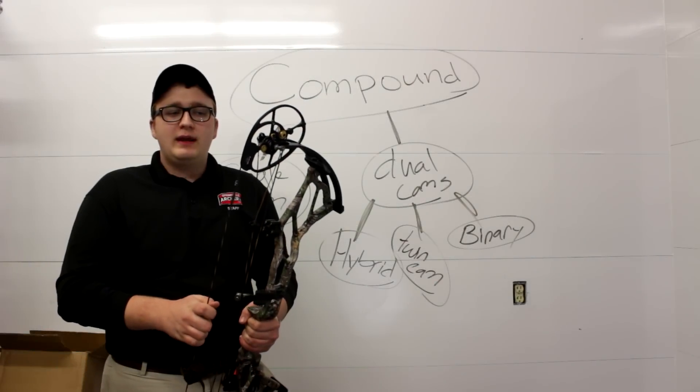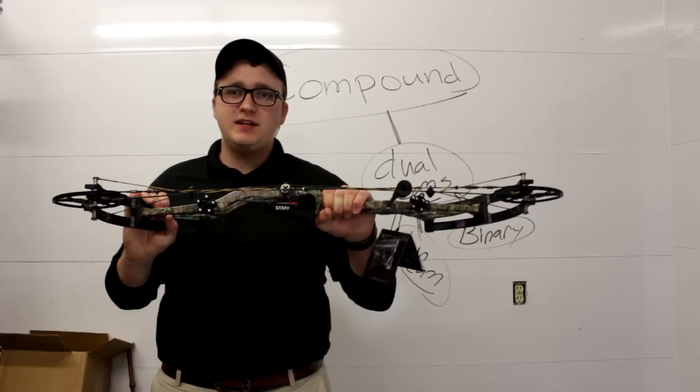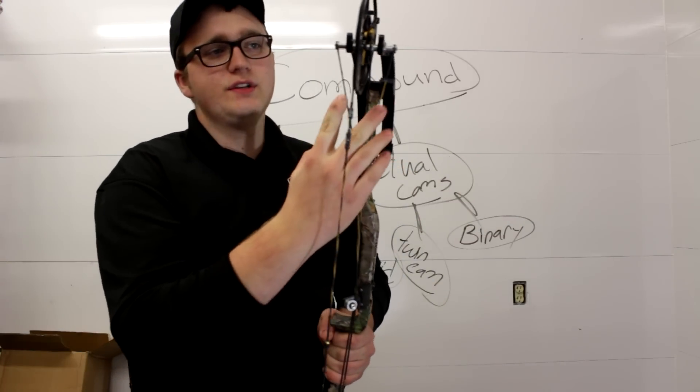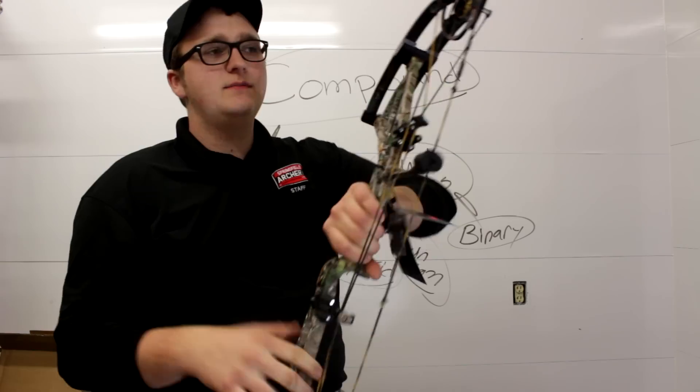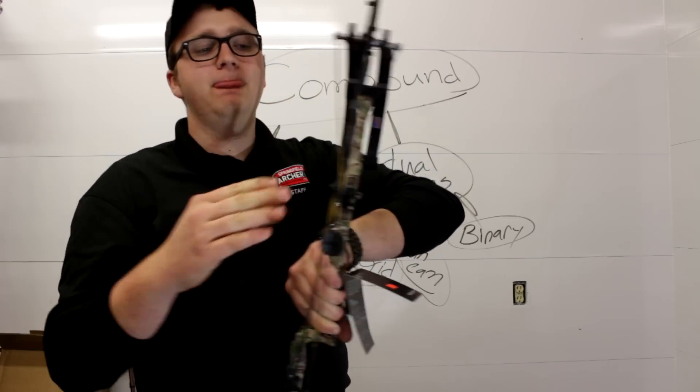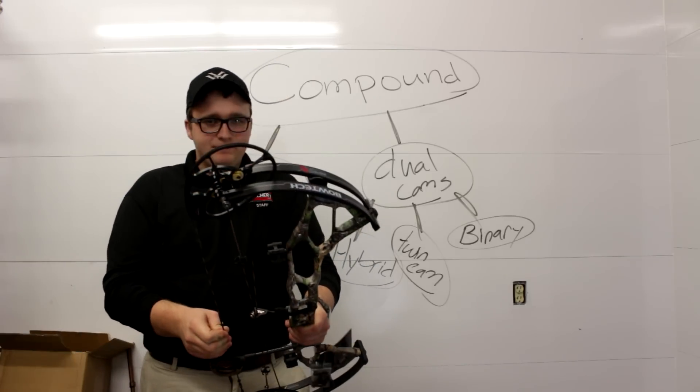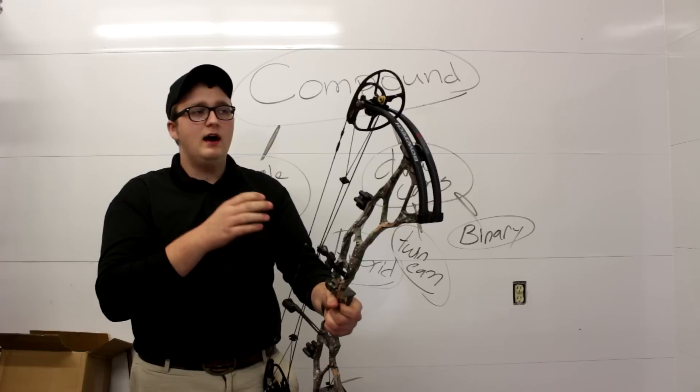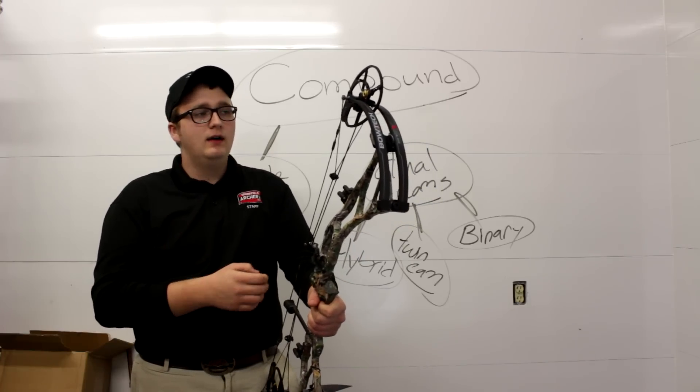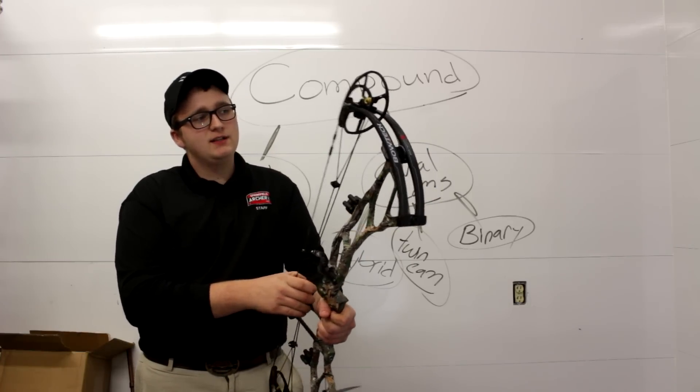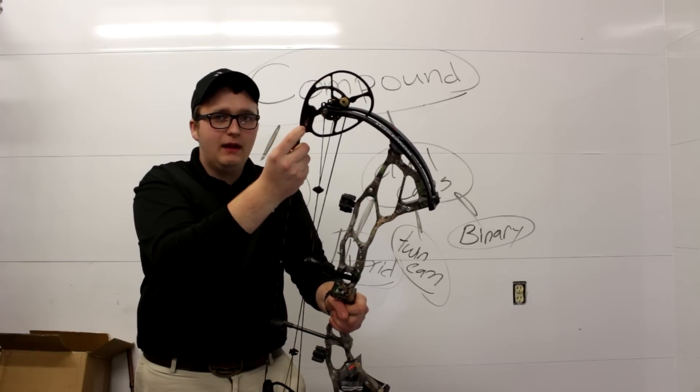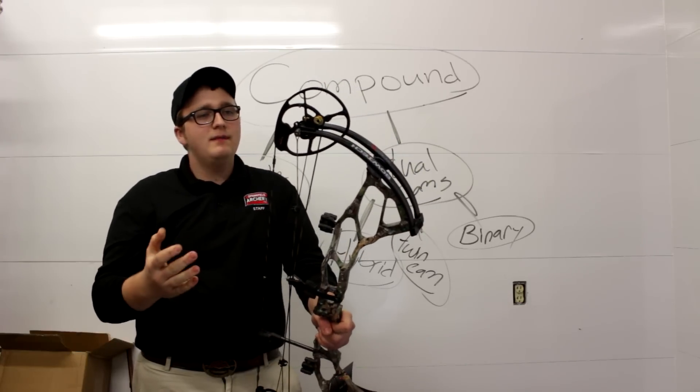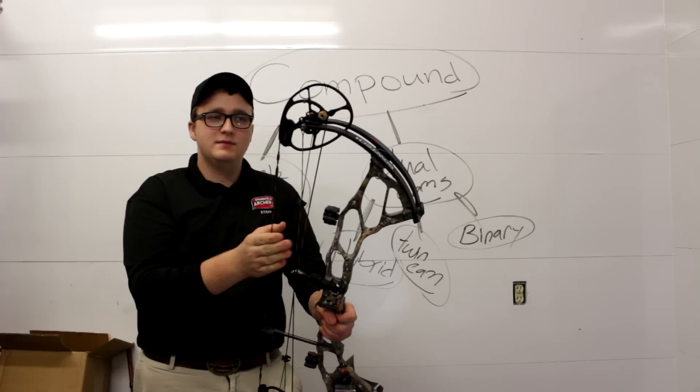Next on the list is the twin cam system. This particular Bowtech BTX possesses this cam system. The easiest way to identify it is the yokes. They will have a yoke on top, going to the limb tips, and on the bottom. Basically, this is the most common mistaken cam system. You hear it called the binary, a binary a lot. Unfortunately, I think that's because Bowtech labels this right on the cam overdrive binary. Unfortunately, they're allowed to do that because they do own the patent on it. However, this is a twin cam system.